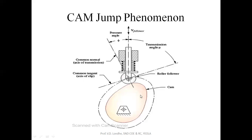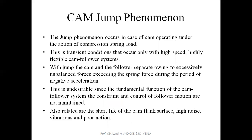How does the cam jump phenomenon occur? Initially when the cam is below a certain limiting speed, the follower continuously makes contact with the cam. But when the cam attains one certain uncontrollable speed, the follower will try to lose contact from the cam. This phenomenon is called chattering noise of the cam. Due to this chattering noise, there will be maximum wear and tear of the follower as well as on the surface of the cam.